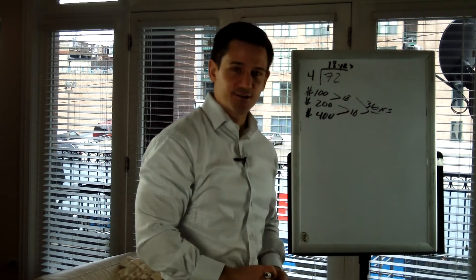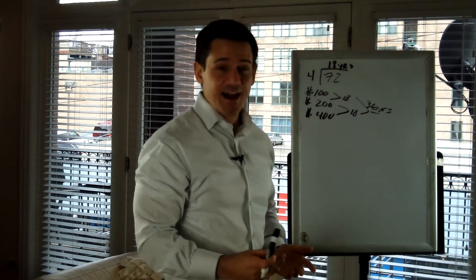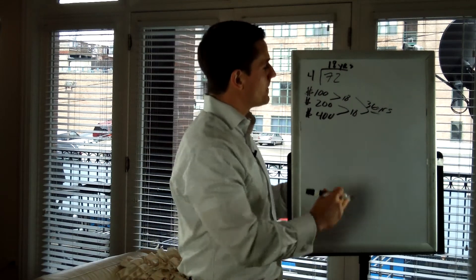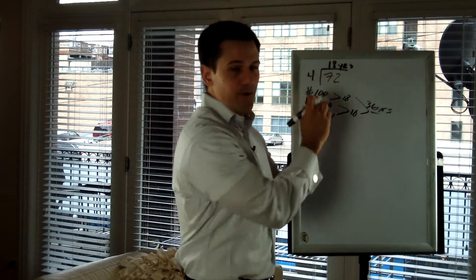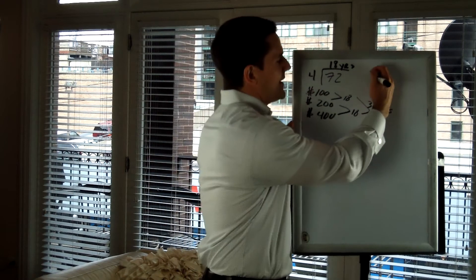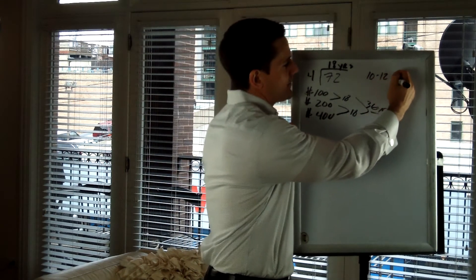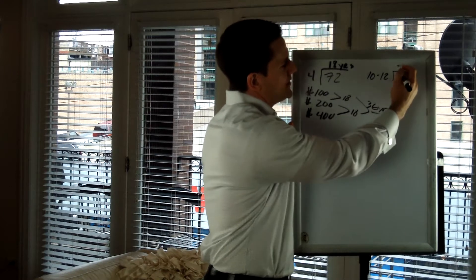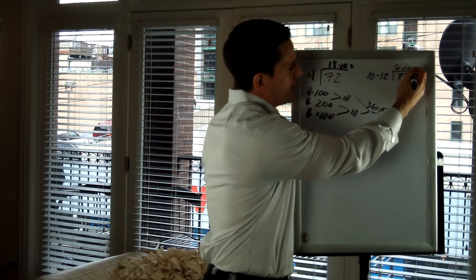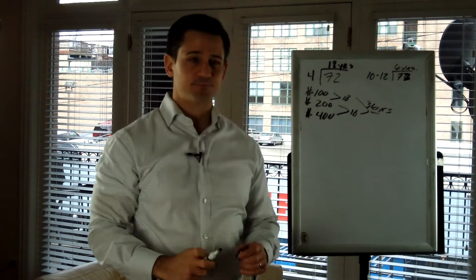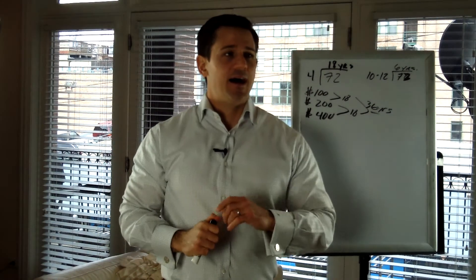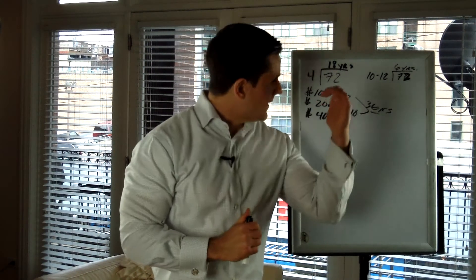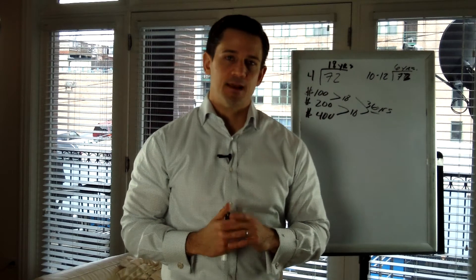So how do you change that rate of return? What if you could get a 10 to 12% rate of return? Divide into 72, that means your money would double every six years. Now how powerful would it be to get a 12% rate of return?